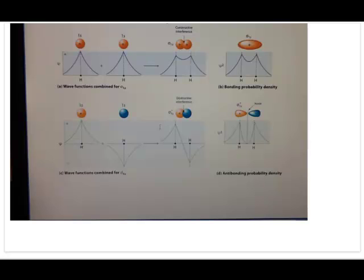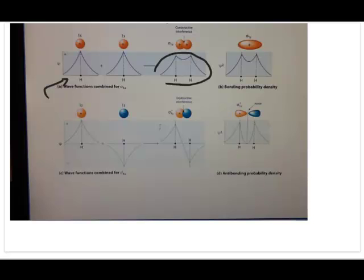For the H2 molecule, the wave function representing the 1s orbital is shown as psi. Taking the two 1s wave functions — one from each hydrogen atom — and doing a linear combination is similar to adding the two waves. When those two waves are added constructively, the resulting shape is the sigma 1s molecular orbital. The dots here represent the nuclei of the two hydrogen atoms. The result of adding those two atomic orbitals gives you psi for the sigma 1s molecular orbital.